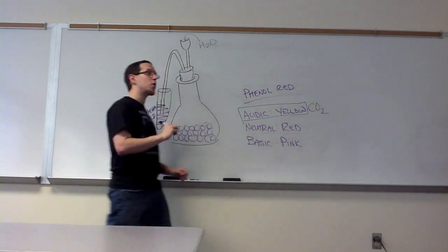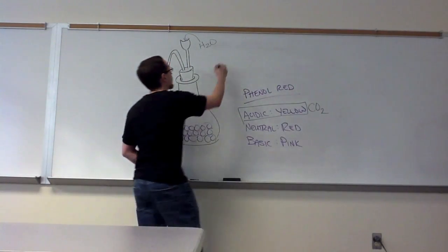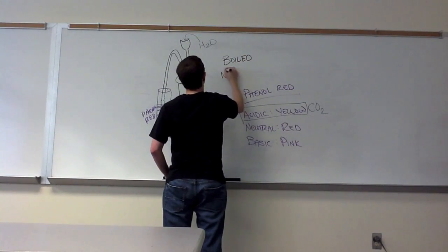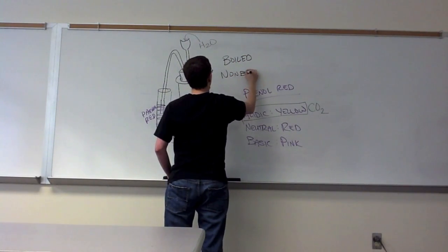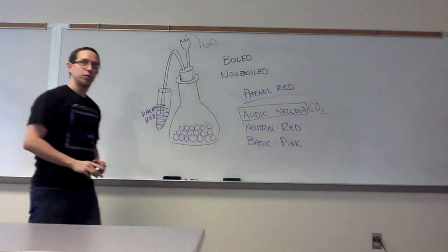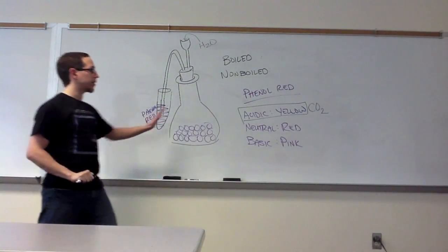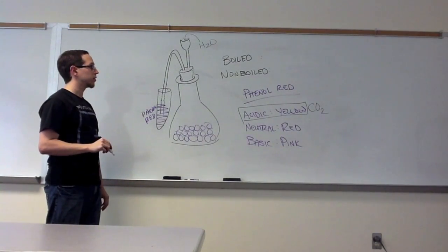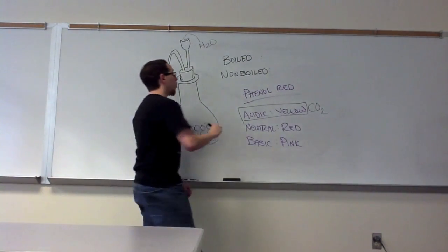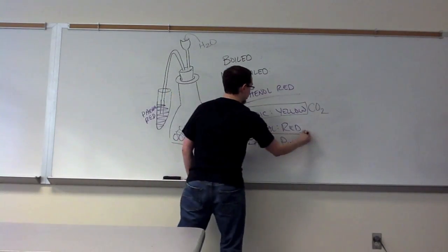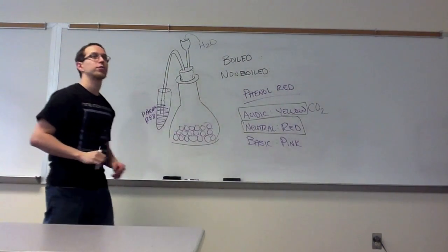Think about which of those two sets of peas, the boiled or the non-boiled, would have turned yellow, based upon everything that we wrote and talked about previously here. The one that doesn't produce carbon dioxide is probably going to remain neutral and therefore stay red.